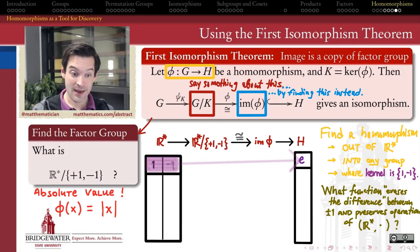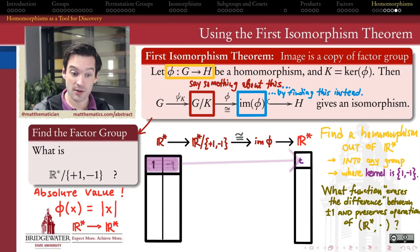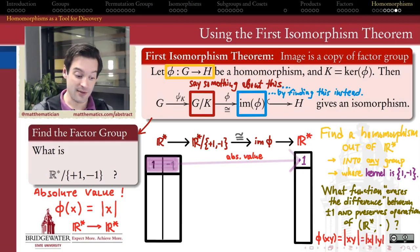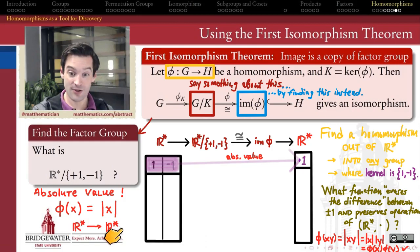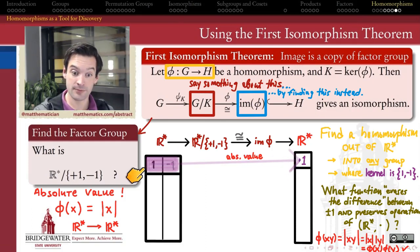The absolute value function does exactly this. It blurs the distinction between +1 and -1 since |1| = |-1|. It also preserves the operation of the multiplicative real numbers, because the absolute value of a product is the product of the absolute values: |xy| = |x|·|y|. So this phi is indeed a homomorphism from R* to R*, and its kernel is exactly {1, -1}, because the elements whose absolute value equals the identity element 1 are precisely +1 and -1.